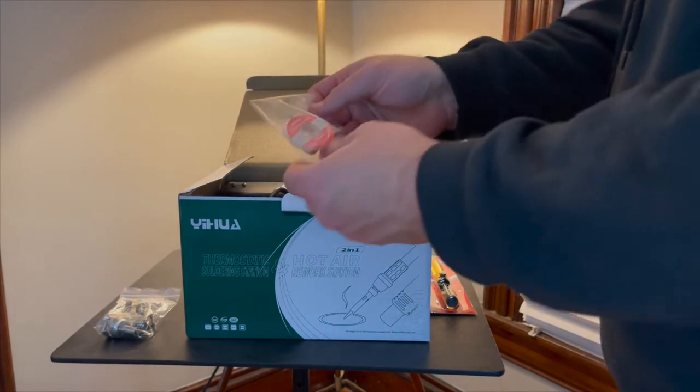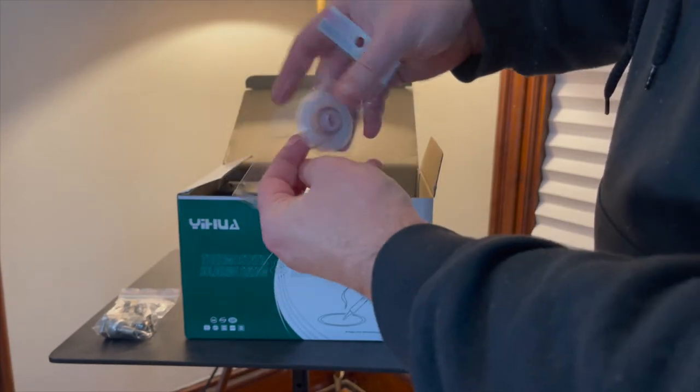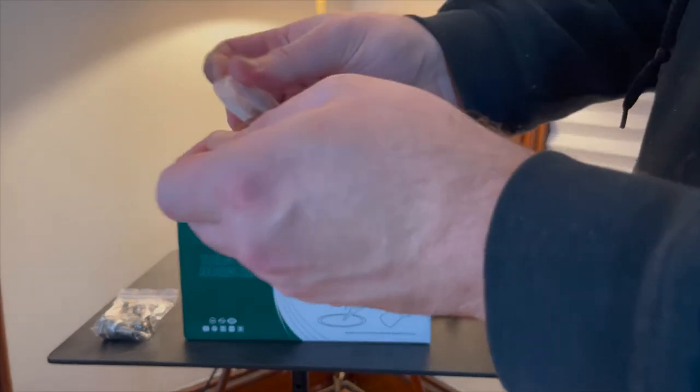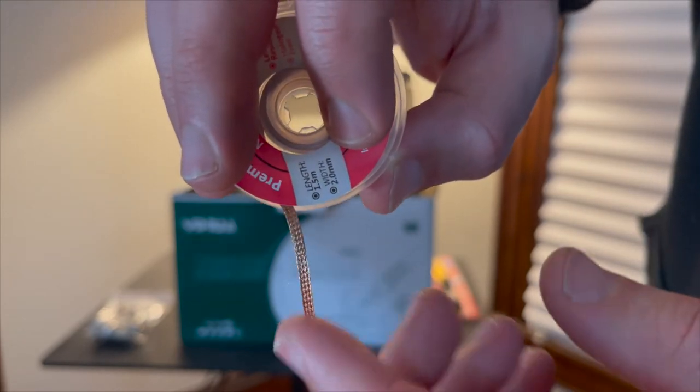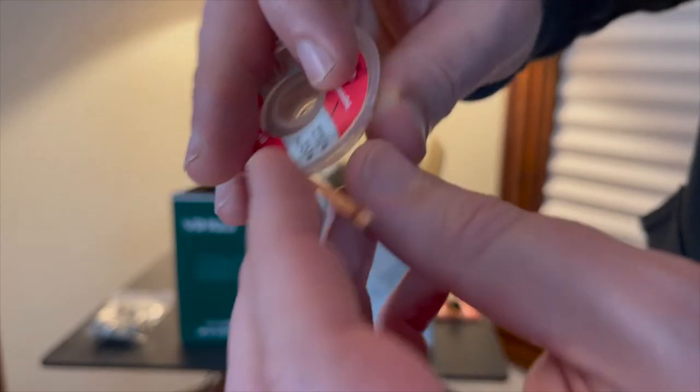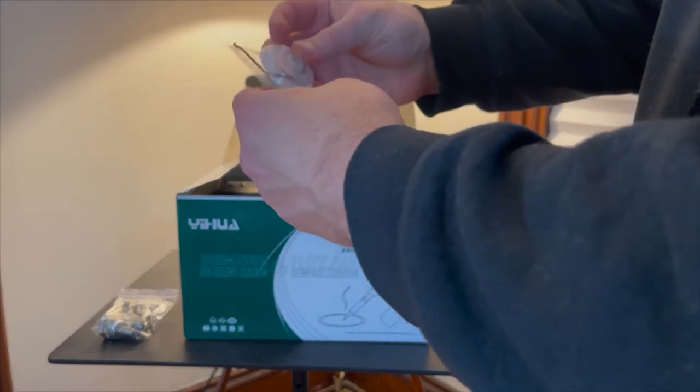And it also came with a solder wick. So this is just a braided copper ribbon. Again, it's like a braided ribbon. And when you heat up the solder, it flows into here. That I've had lots of luck with. So it's nice that it's included.